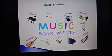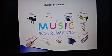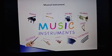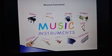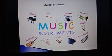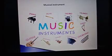First one is piano. The spelling of piano is P-I-A-N-O. Then flute — F-L-U-T-E, flute. Then drums — D-R-U-M-S, drums. Then trumpet — T-R-U-M-P-E-T, trumpet. Then guitar — G-U-I-T-A-R, guitar. Then saxophone — S-A-X-O-P-H-O-N-E, saxophone.